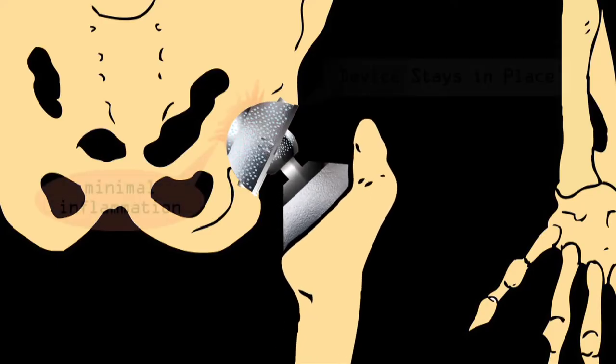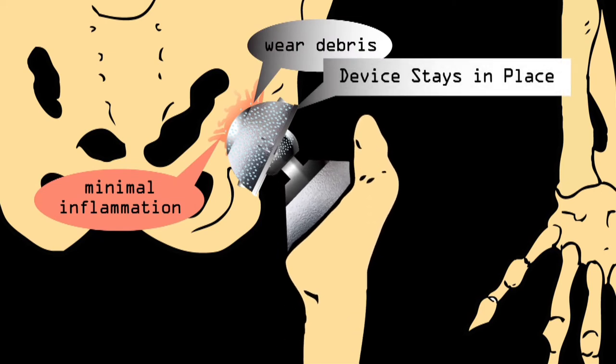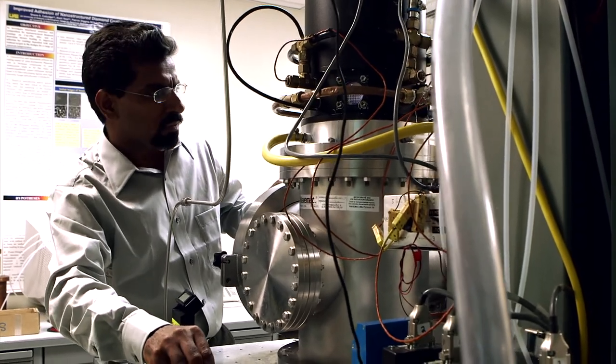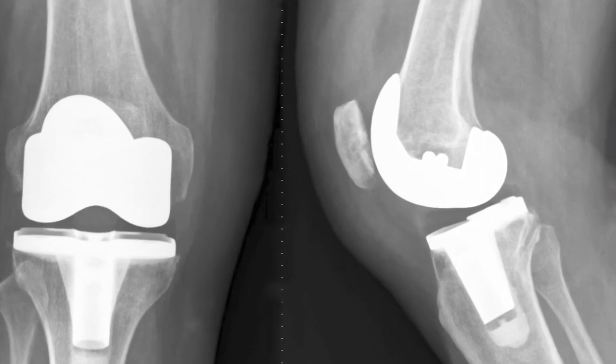Researchers think nanodiamond coatings may end the shedding of metal particles, thereby increasing the life of implants to three times what they are now. And if nanodiamonds shed too, the studies suggest that the particles are non-toxic and don't cause the inflammation that leads to implants breaking loose and requiring corrective surgery.